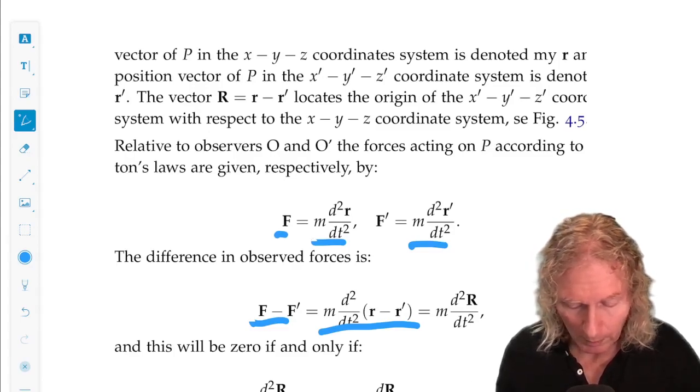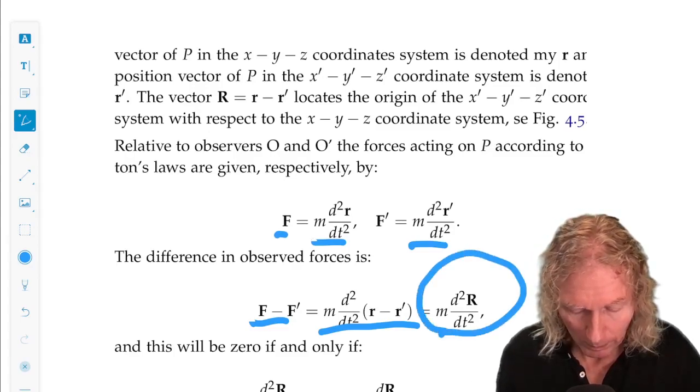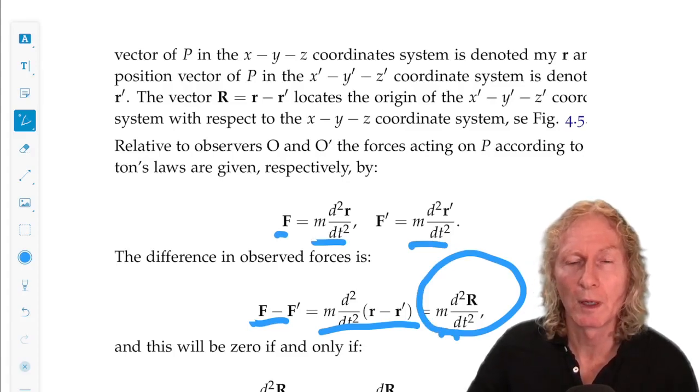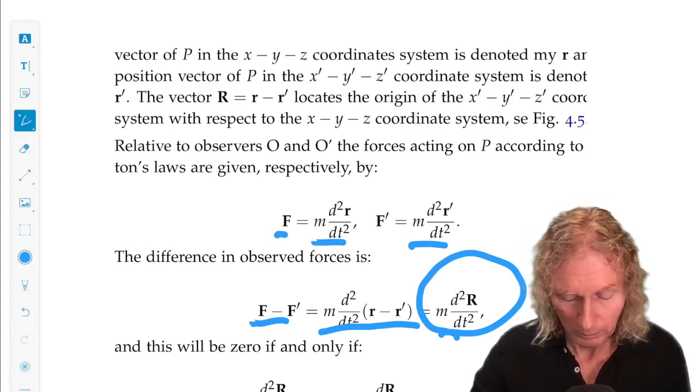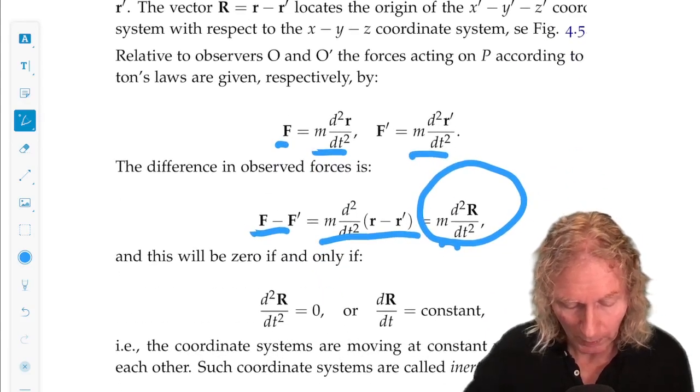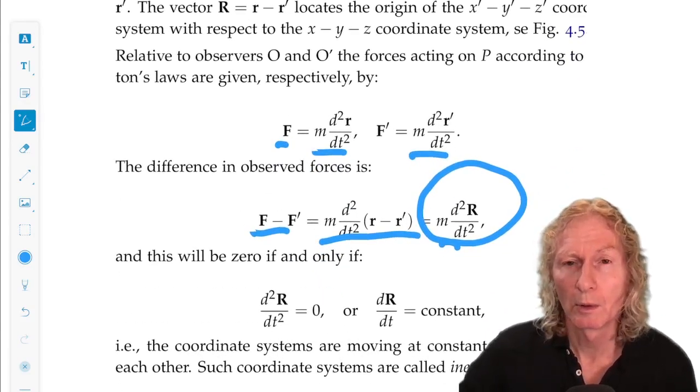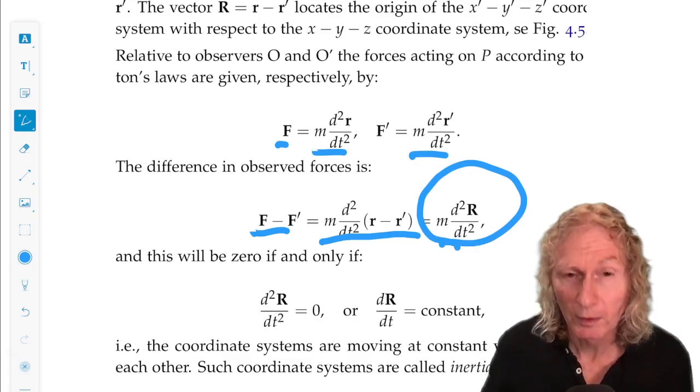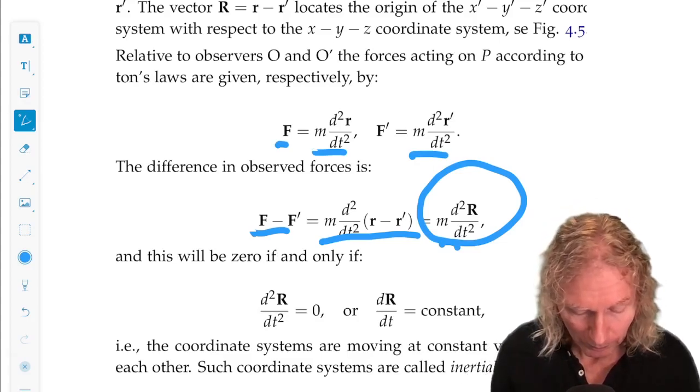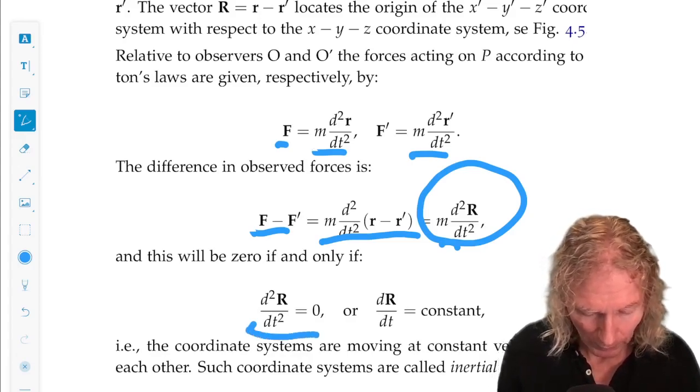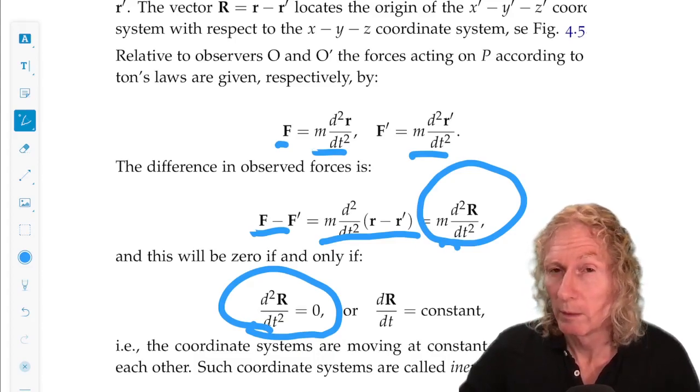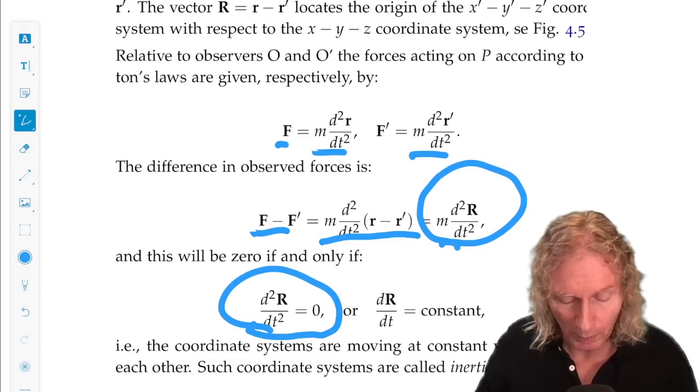Remember, R minus R prime is M times the second derivative of the vector that locates one coordinate system with respect to the other. Now, this is going to be zero if and only if the second derivative of R with respect to T twice is zero, or dR/dt is constant.